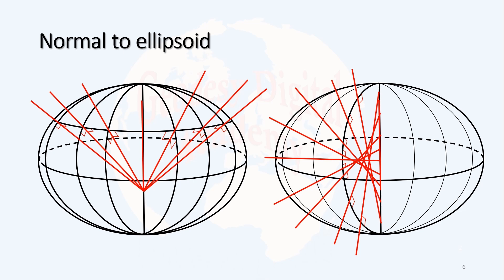The only case that this normal can go through the center is if they are normal at the equator, or they are at the polar area, the north pole or south pole. Otherwise, no normal can go through the center of the ellipsoid.